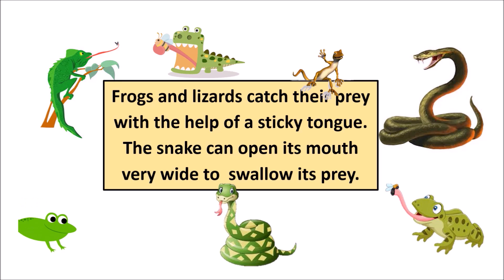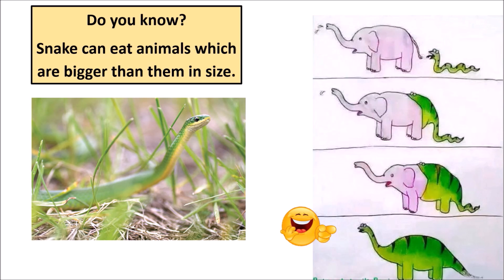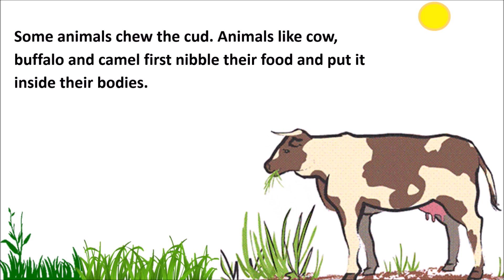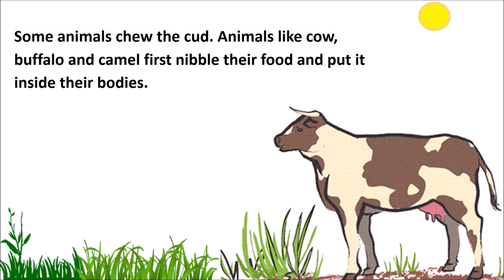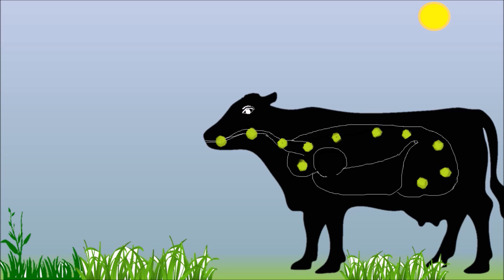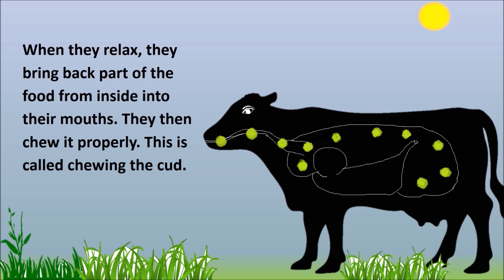The snake can open its mouth very wide to swallow its prey. Did you know snakes can eat animals bigger than themselves? Some animals chew the cud — animals like cow, buffalo, and camel first nibble their food and put it inside their bodies. When they relax, they bring back part of the food from inside into their mouths and chew it properly. This is called chewing the cud.